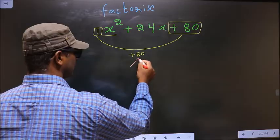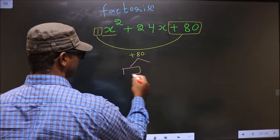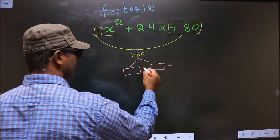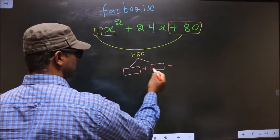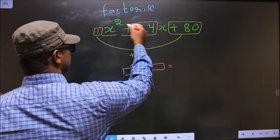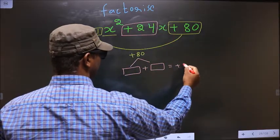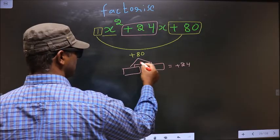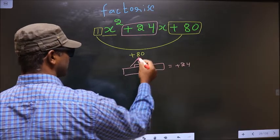Now you should look out for 2 numbers such that when you add these 2 numbers you should get the middle coefficient, that is plus 24, and also when you multiply these 2 numbers you should get plus 80.